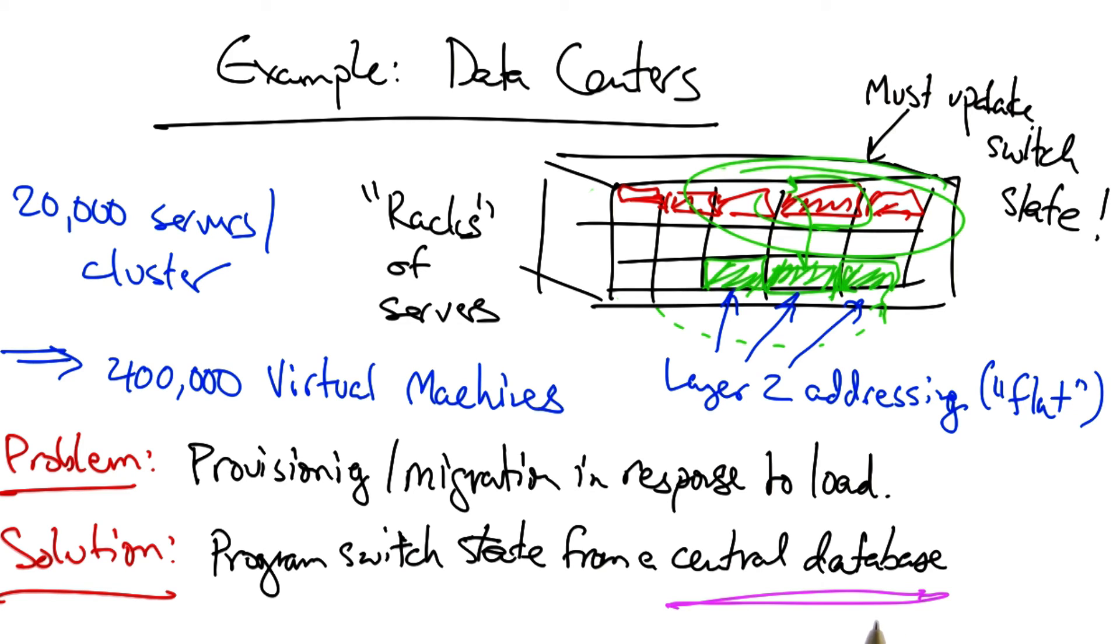What this means is that a server can be migrated from one portion of the data center to another without requiring the virtual machine to obtain new addresses. All that needs to happen for forwarding to work is the state of these switches needs to be updated.